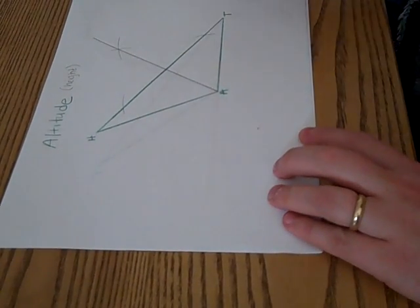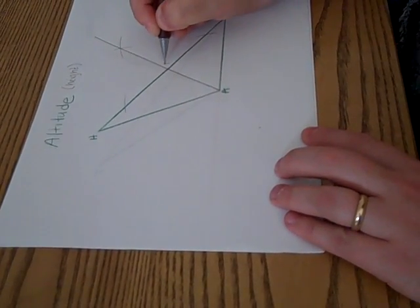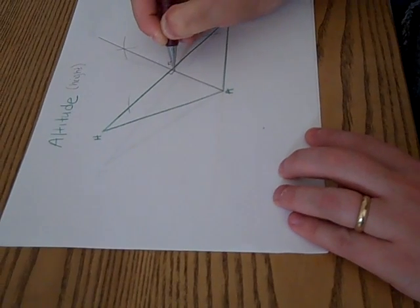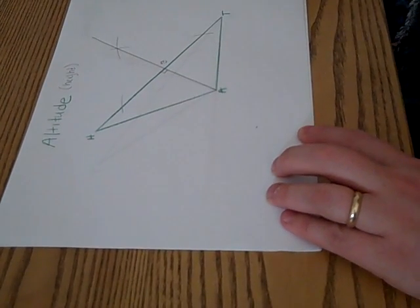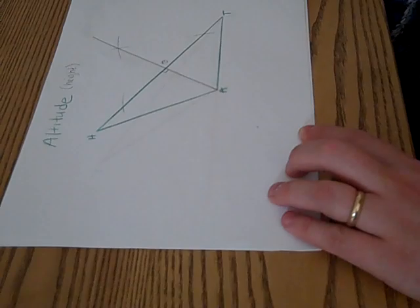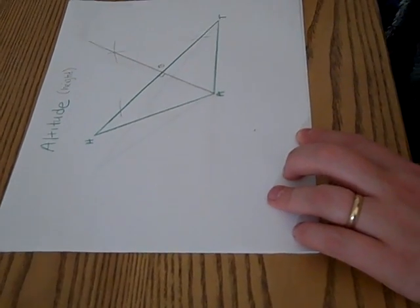And now I've constructed altitude A-B and this angle A-B-H is 90 degrees. Now that was one of the easy altitudes.